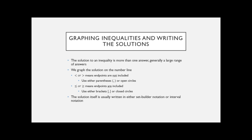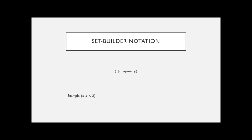There are two ways to write the solution: set builder notation or interval notation. It's really important to learn interval notation because that's the standard notation used in college algebra. For set builder notation, you need curly braces, then your variable — in this case X — followed by a vertical bar, which is like half of the absolute value symbol. I read the vertical bar as the word 'where.'